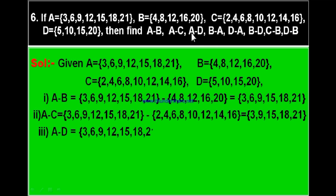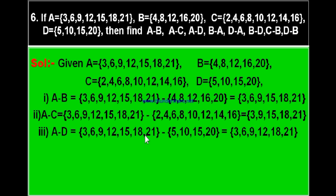Third part: A minus D. Write set A minus set D = {5, 10, 15, 20}. Element 3 is not in D — write 3. 6 is not in D — write 6. 9 is not in D — write 9. 12 is not in D — write 12. 15 is in D — leave it. 18 and 21 are not in D — write 18 and 21. Therefore A minus D equals {3, 6, 9, 12, 18, 21}.